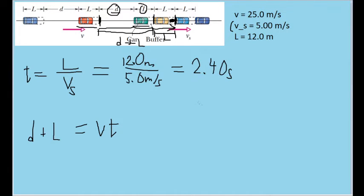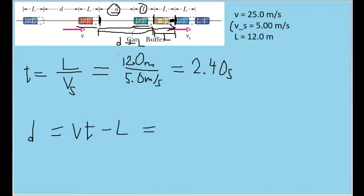We can solve for D by subtracting L from both sides. We have all the values: 25 meters per second for the fast speed, 2.4 seconds for the time, minus L of 12 meters. Plugging in all those values, we find that D is equal to 48 meters.